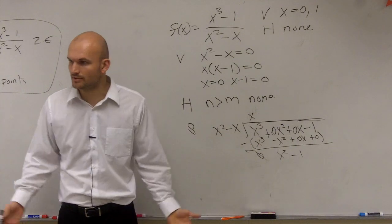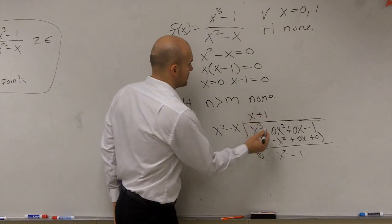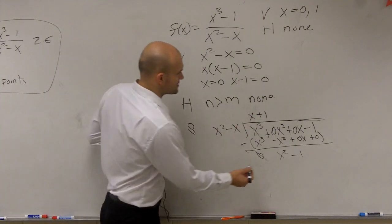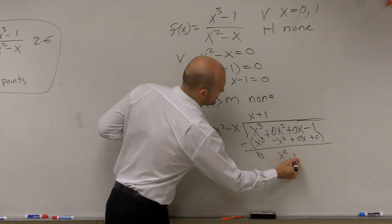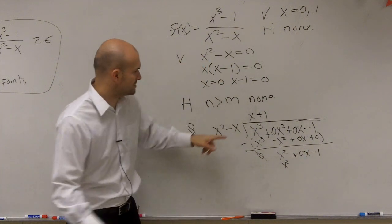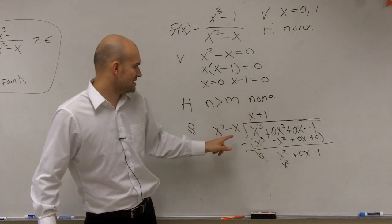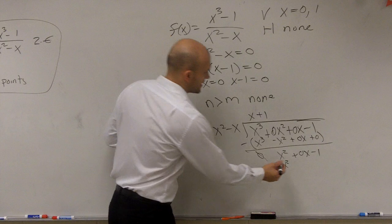So now I say, does x squared go into x squared? Yes, it does, one time. 1 times x squared is x squared. I guess I could say, just put those coefficients there. 1 times x squared is x squared. 1 times negative x is a negative x.